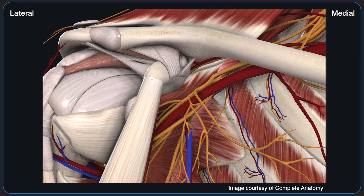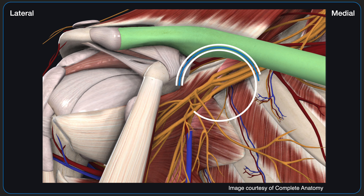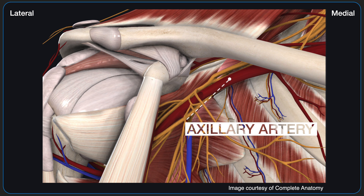In this video, we're going to demonstrate and discuss the infraclavicular approach to blocking the brachial plexus. Immediately below the clavicle in the costoclavicular space, the divisions of the brachial plexus regroup as three cords that travel posterior to the first portion of the axillary artery.